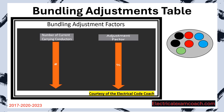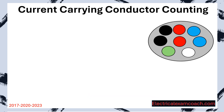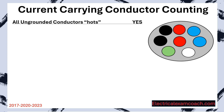Up until this point we've had all hot conductors inside our conduit. But what happens if we add in a neutral — is it considered a current carrying conductor? What about grounding conductors? Let's learn how to count conductors. We're only going to be counting the current carrying conductors. All ungrounded conductors — all of the hots — are going to be considered current carrying conductors under normal circumstances.